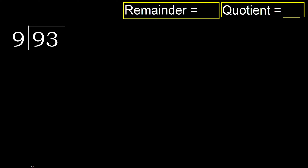93 divided by 9. 9 is not less, therefore start with 9. 9 multiplied by which number is nearest to 9 but not greater? 9 multiplied by 2 is 18 — 18 is greater. 9 multiplied by 1 is 9 — 9 is not greater. So we use 1.